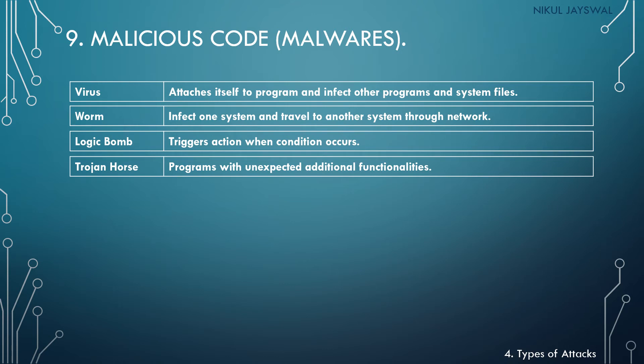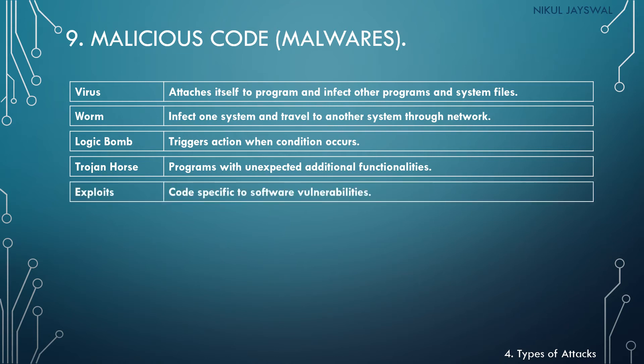Then there is the Trojan horse — programs with unexpected additional functionalities. For example, if you install some third-party software and it installs unexpected additional functionalities that steal your data, that is called a Trojan horse. Then exploits — these are specialized codes specific to software vulnerabilities. A specific code is generated for a software weakness and used to exploit that vulnerability.